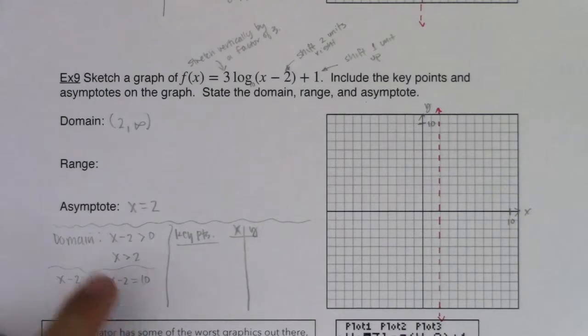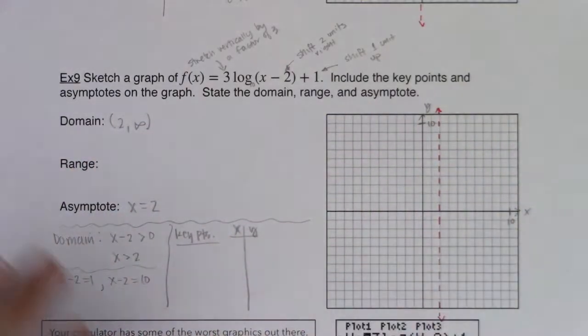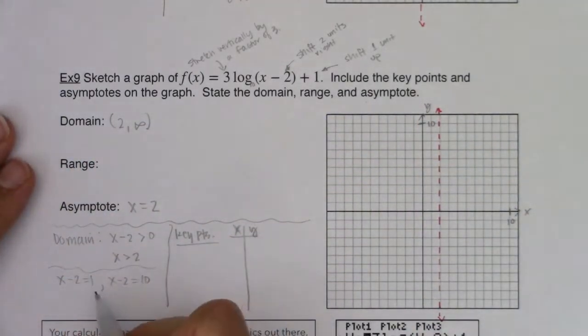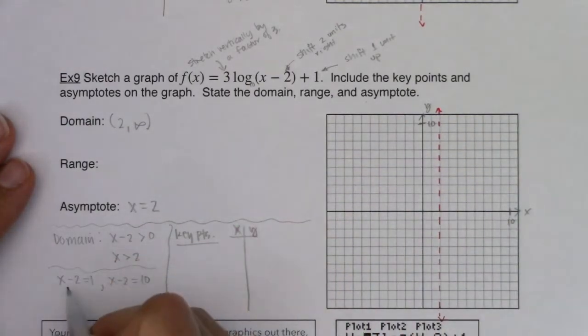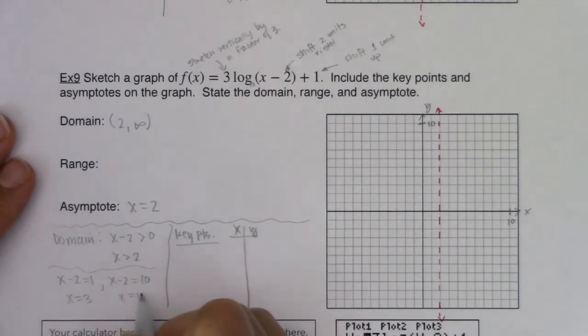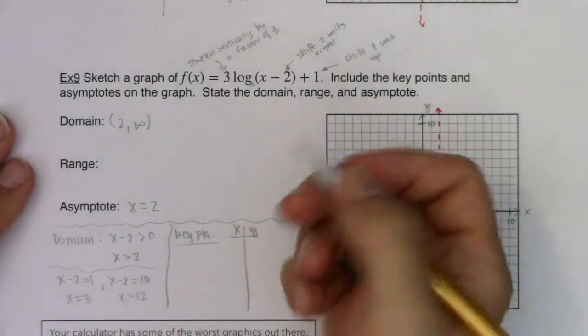The next number I would have picked was 100, but that's so large it won't graph on my graph. So here we go. If I was going to solve for x here, I'm going to get 3, and here I'm going to get 12. So let's see what we got here. If I plug in 3 and 12, let's see what those y values are going to be.